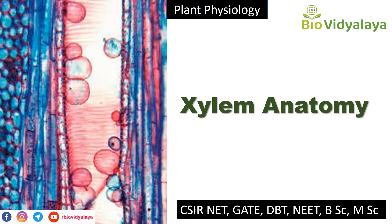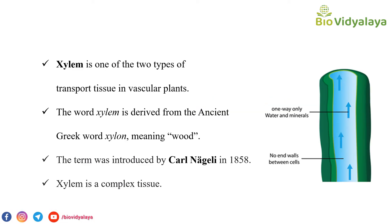Without further delay, let's get into today's class. As we discussed in our previous lecture video, the function of xylem is to transport water and minerals from root to other parts of the plant. And the function of phloem is to transport food, that means photosynthetic products. Xylem is one of the two types of transport tissue in vascular plants.